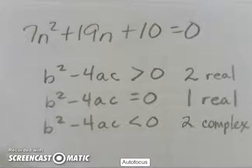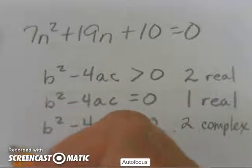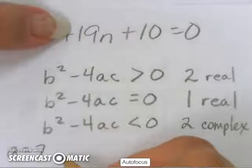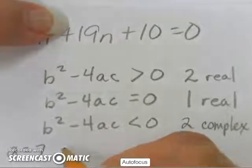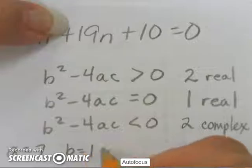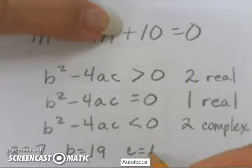So, I will take the values. My a value is in front of my squared term, so a is 7. B is in front of my linear term, the n, so b is 19, and c is my constant, 10.